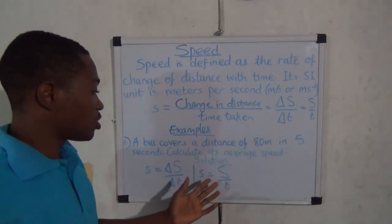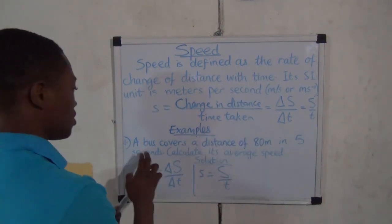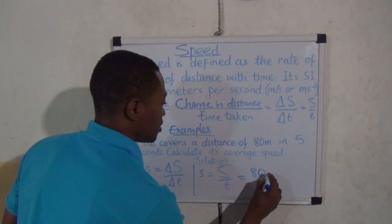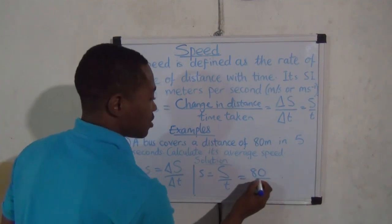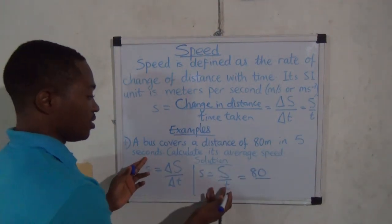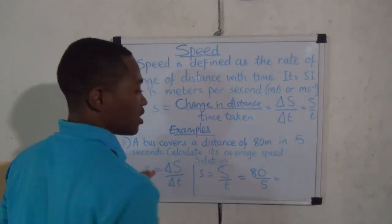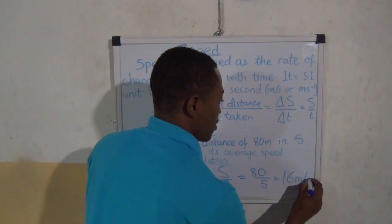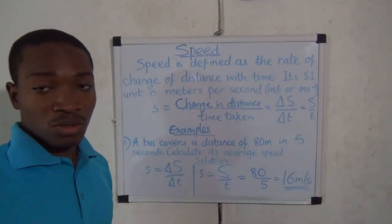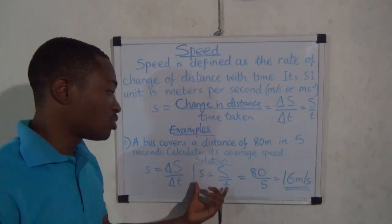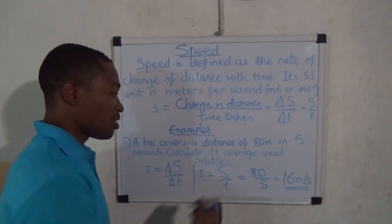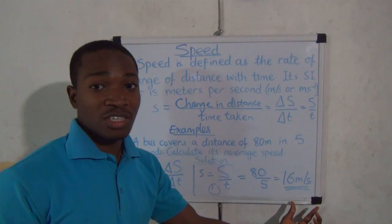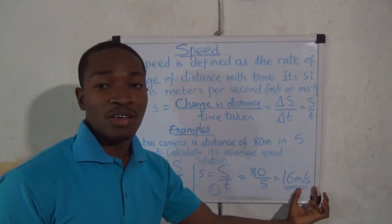Speed equals distance divided by time. The distance is 80 meters and the time is 5 seconds. So 80 divided by 5 gives 16 meters per second. Take note: when solving a problem in physics, the first thing you do is state the formula. You must also state the SI unit alongside your answer — meters per second.